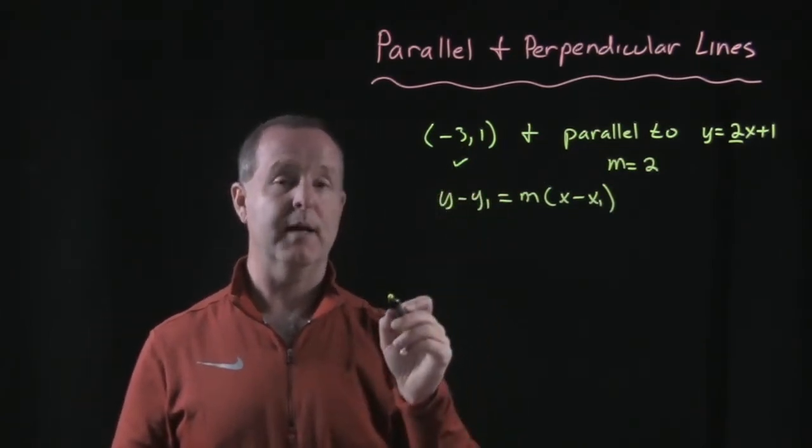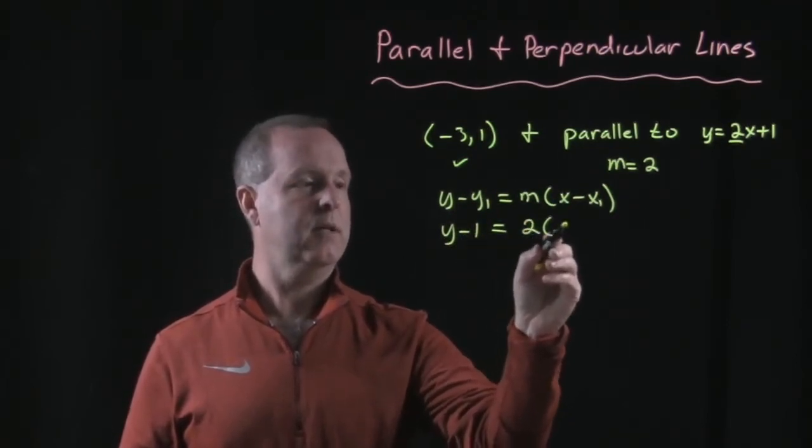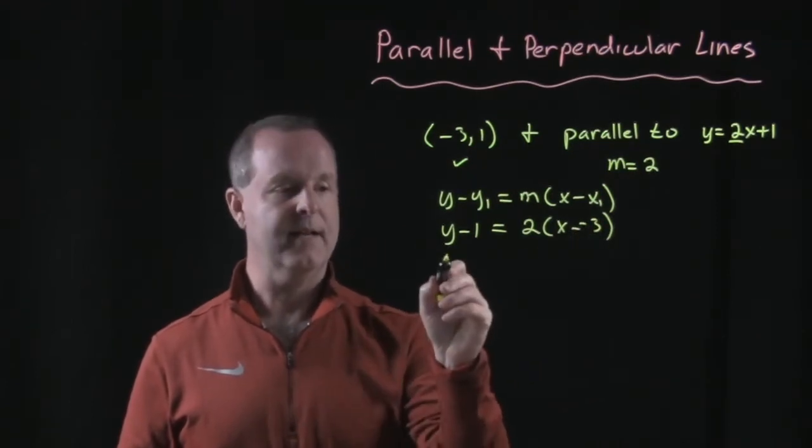So from there, let's plug in what we have. y - 1 equals my slope, which is 2, times x - (-3). And then cleaning that up.